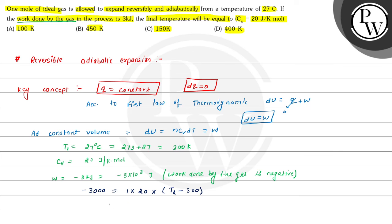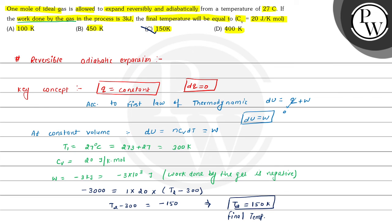After substituting the values, we get T2 minus 300 equals minus 150. So from here we can calculate the value of T2, that is our final temperature, it will be equals to 150 Kelvin. This T2 is our final temperature. This is given in option C, hence option C is the correct choice for this question. Hope you understood it well. All the best and thank you.